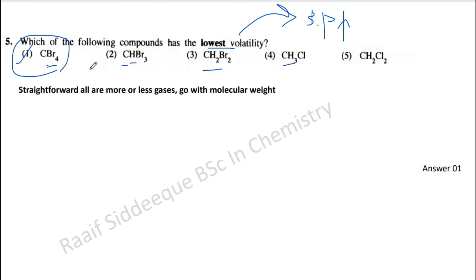Bromine has an atomic mass of about 79, so you can imagine how much difference that makes in molecular weight. According to that, you can determine the answer very quickly. The key is to know those two main factors that determine boiling points: molecular weight and intermolecular interactions.